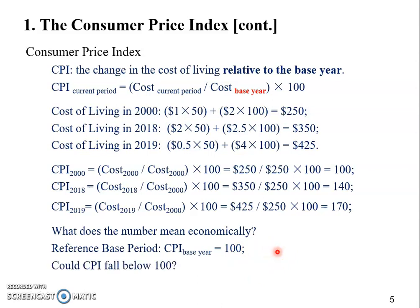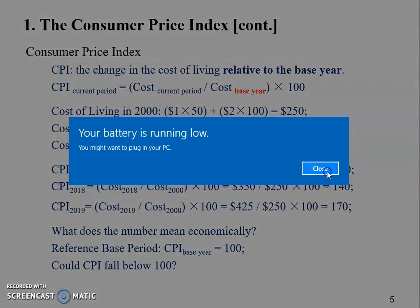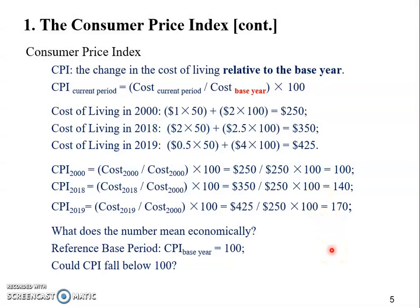Could CPI fall below 100? I'd like to leave this as an assignment — we can discuss it during our virtual meeting. Here's a clue: in reality, the U.S. government actually uses three years as the base period, not just a single base year. They use 1982, 1983, and 1984 as the base period. The reason they use three years is so they can take the average and even out any outlier or single event that might have a strong influence on the economy in any one year. The average helps exclude that kind of outlier influence.